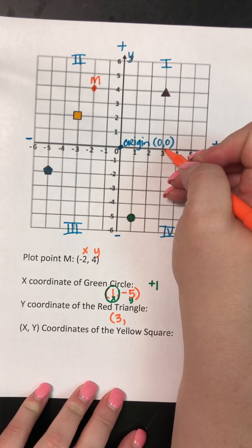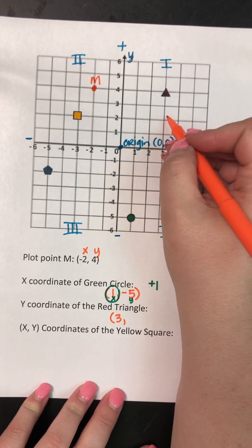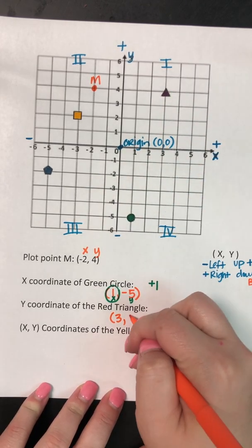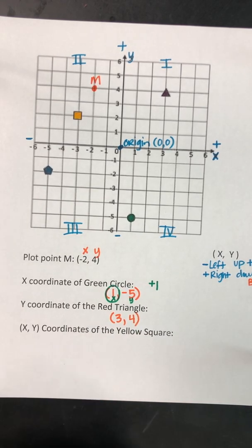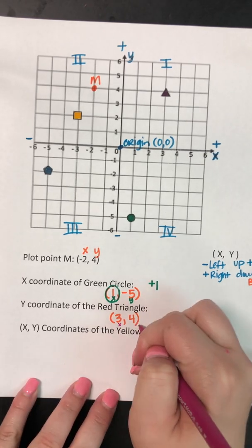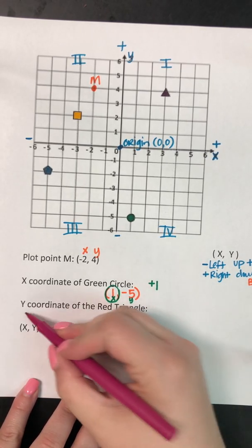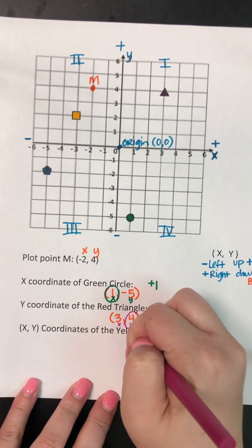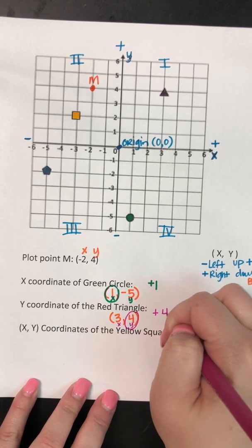And then from 3, I go upstairs, 1, 2, 3, 4. So that's my whole coordinate. And I can label it x and y. And this time they want the y. So my answer would be positive 4.